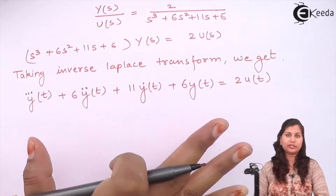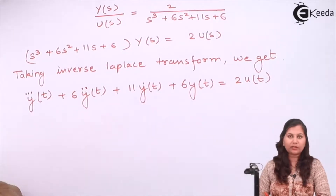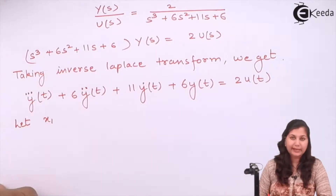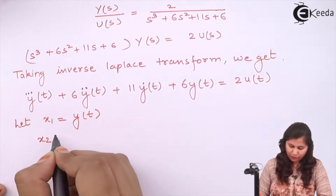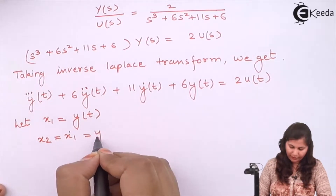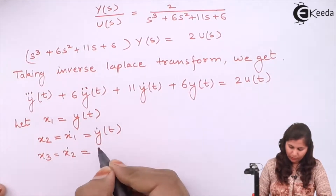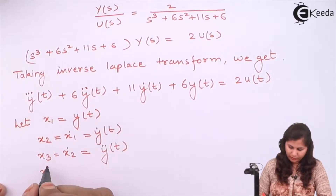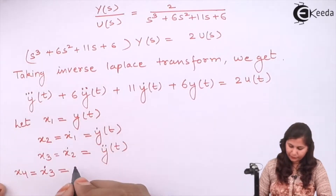Now in this differential equation we will choose the state variables. Let our first state variable x₁ = y(t). Now x₂ = ẋ₁ = ẏ(t). x₃ = ẋ₂ = ÿ(t). And x₄ would be ẋ₃ = y‴(t).